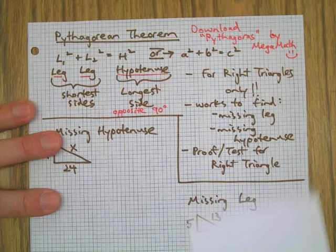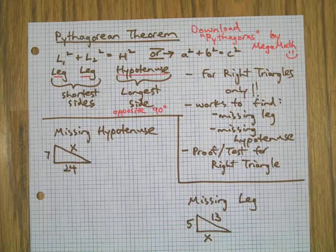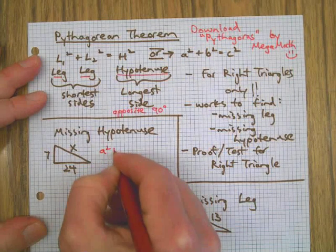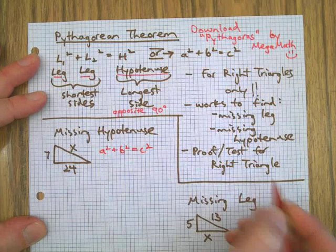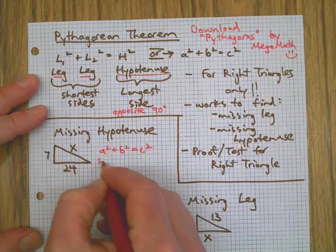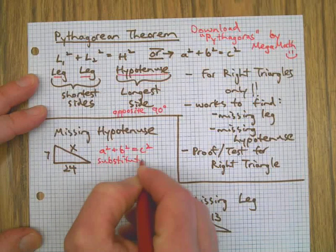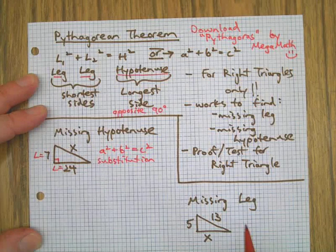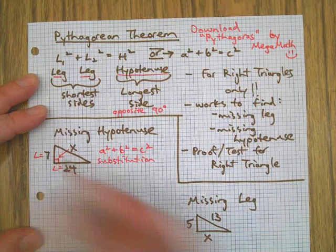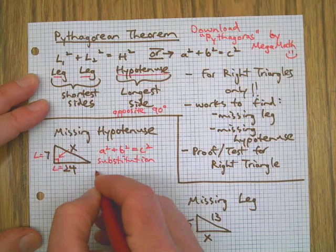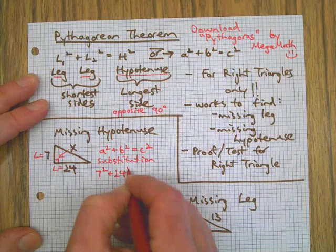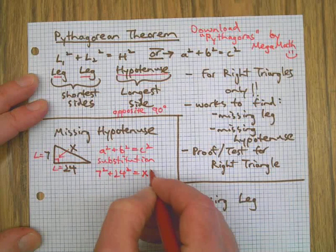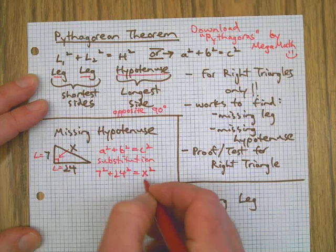First, I'm going to teach you how to find a missing hypotenuse. Step one, it always works good to just write the equation. Now we're going to use substitution. That's a leg, that's a leg, the two shorter sides. The hypotenuse is always opposite of the 90 degree angle. So here we've got a leg of 7, a leg of 24, and the unknown. We'll just substitute x for c.